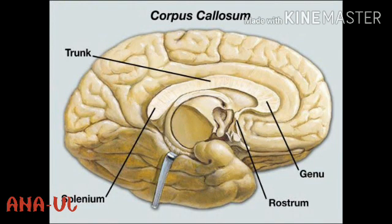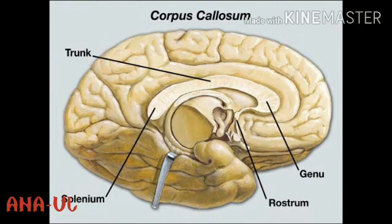First we can discuss about the corpus callosum. The corpus callosum comprises the largest bundles of fibers. Most of these arise from the neocortex of one cerebral hemisphere and terminate into the corresponding parts of the opposite cerebral hemisphere. It lies at the bottom of the longitudinal fissure. It is divided from before backwards into: the rostrum, a thin lamina of nerve fibers that connects the genu to the upper end of the lamina terminalis; the genu, which is the curved anterior end; and the body or trunk, which is arched posteriorly.